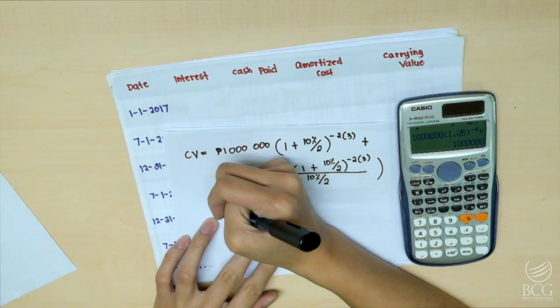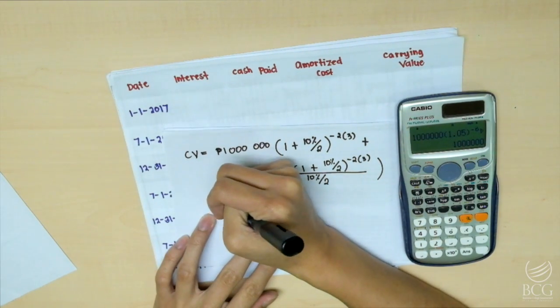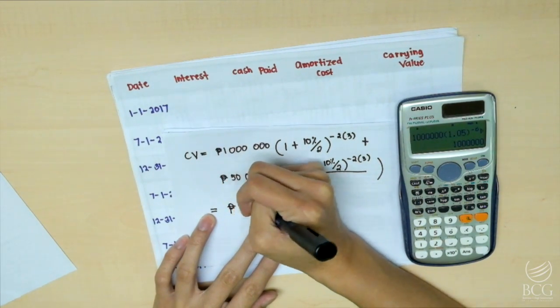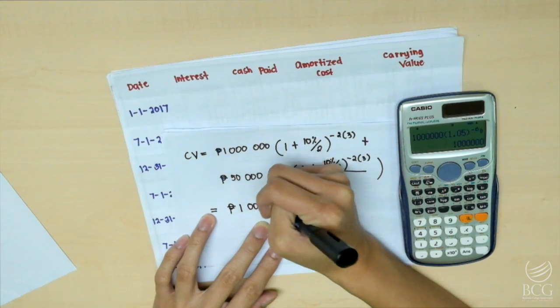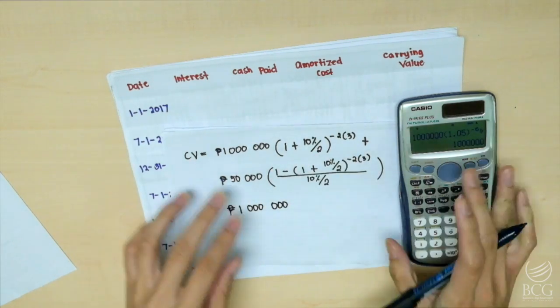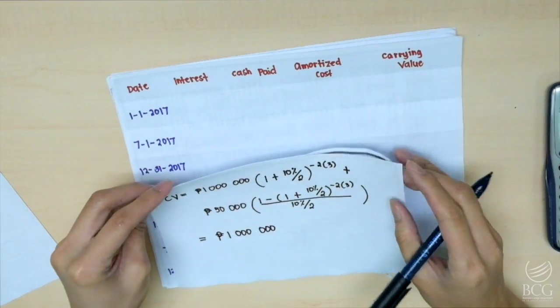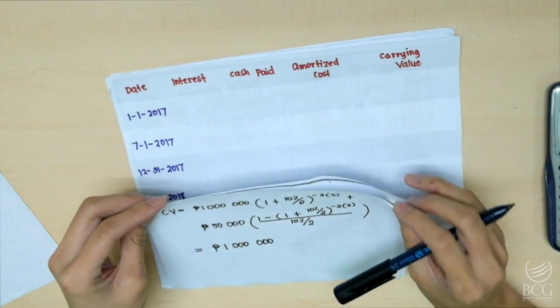Now the carrying value is equal to the principal, which is 1 million. Now let's do the amortization table.